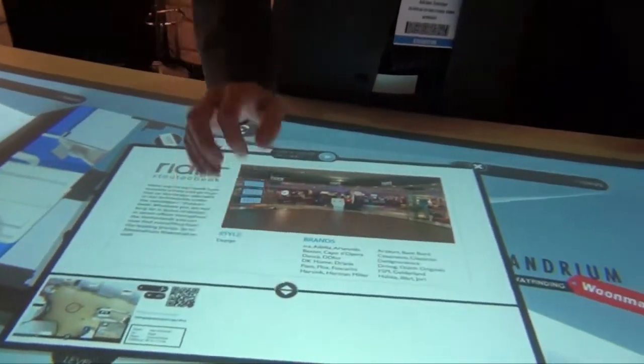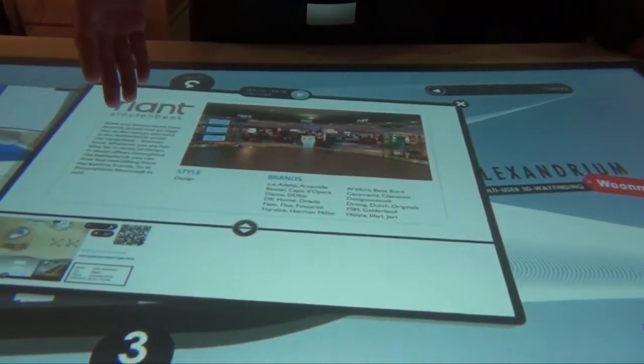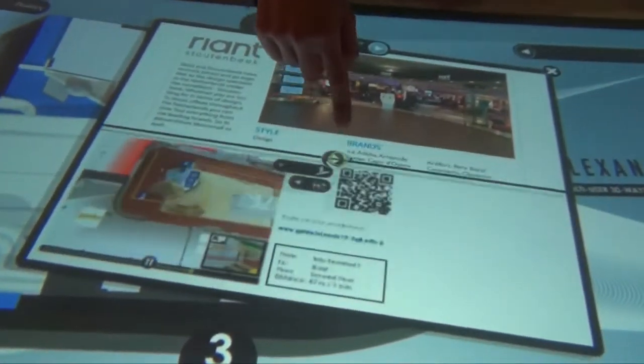A personal info window pops up with a short shop description and general information such as opening hours. The way to the selected shop is displayed on a 3D map at the bottom of the window.